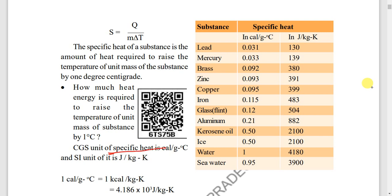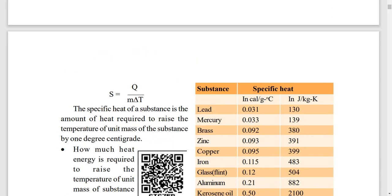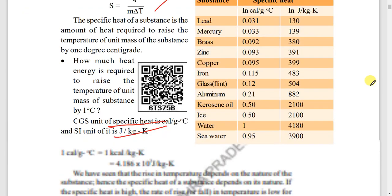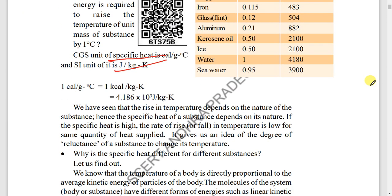The SI unit of specific heat is joules per kilogram per kelvin (J/kg·K). The equation is s = Q / (m × ΔT). Make sure you remember this equation well.